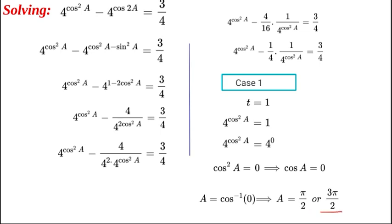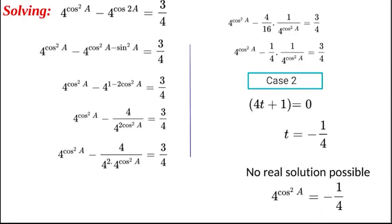Now I've written down case 2, and we can see that the second factor 4t + 1 = 0. Bring the 1 across, change the sign, divide across by 4, and we will get t = -1/4. Set that back to the substituted value, so we have 4^(cos²A) = -1/4.